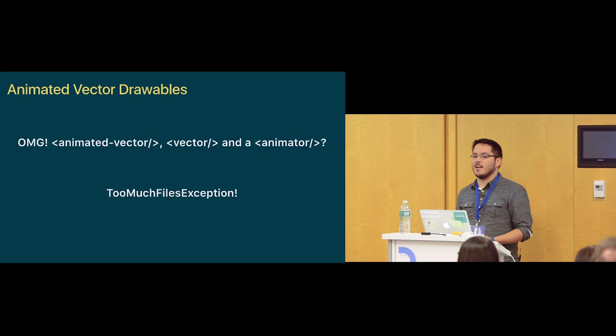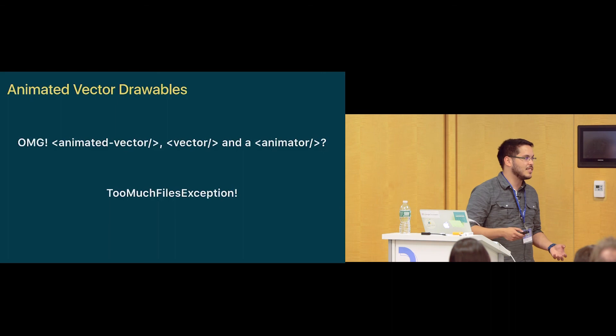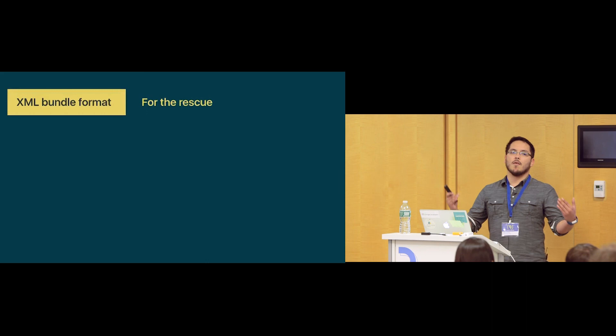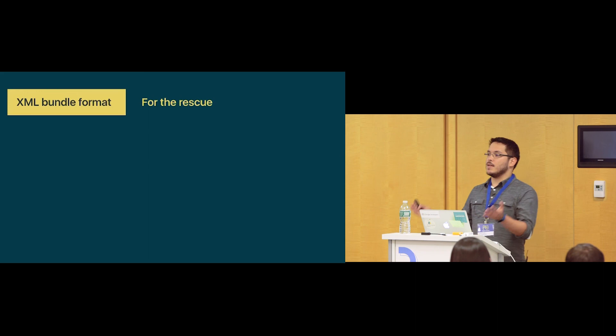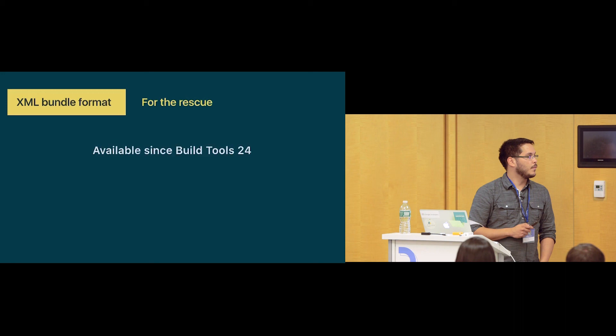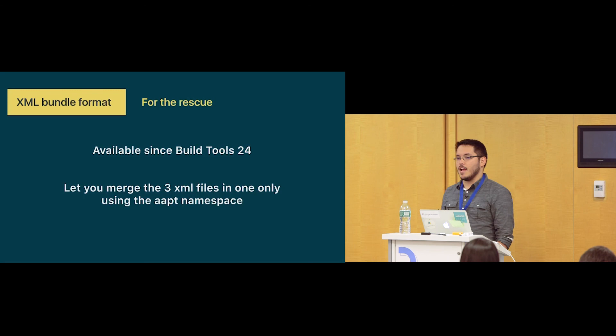You might think it's too many files — an animated vector drawable, a vector, and an animator. But at Google I/O this year, Google announced something called XML bundle format, which allows you to put all three components in the same file. You can have your animated vector drawable, your animator, and your vector drawable in the same file, making connections in one place. It's available since build tools 24 and lets you merge the three files in one namespace using the AAPT namespace.